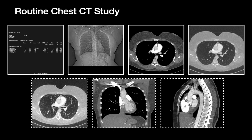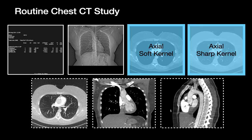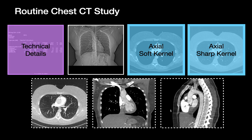Routine chest CTs are usually composed of several different imaging series. There are usually two actual CT series representing two different ways of displaying the same CT volume. One is a soft kernel series that is less edge-enhanced and less noisy, and the other is a sharp kernel series that is more edge-enhanced and also more noisy. We'll use the sharp kernel series when looking at the lung parenchyma, and the soft kernel series for everything else. Technical details will appear in another series — usually a few images of text and numbers telling us about radiation dose, protocols, and contrast.